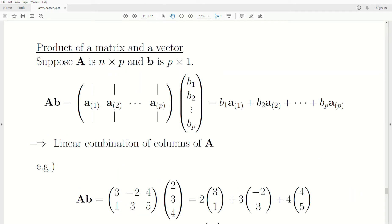Here we're going to look at the product of a matrix and a vector. So the matrix is n by p and the vector is p by 1. It conforms, so we can take this product.